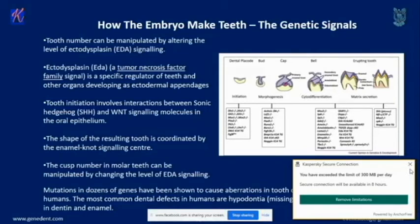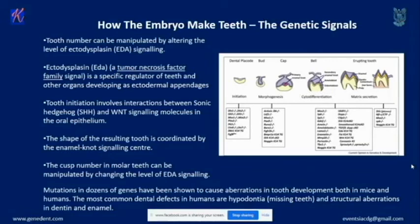Tooth initiation involves interaction between Sonic Hedgehog and WNT signaling molecules in the oral epithelium. The enamel knot determines the shape of the tooth and the number of cusps in molar teeth — those hill-like features on molars are controlled by EDA signaling. Sometimes we may see extraordinary teeth with extra cusps in patients, which points to something with EDA signaling. Missing teeth, which we call hypodontia in dental terms, is due to the number of interactions between these signaling pathways.